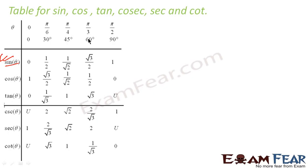For other values of sin such as sin 45°, sin 55°, sin 57°, we can use a sin table. But in most questions we get, these standard values are sufficient. For cos: cos 0° is 1, cos 30° is √3/2, cos 45° is 1/√2, cos 60° is 1/2, cos 90° is 0. For tan: tan 0° is 0, tan 30° is 1/√3, tan 45° is 1, tan 60° is √3, and tan 90° is undefined.